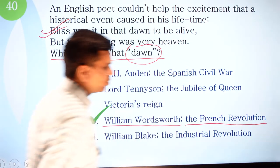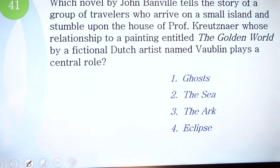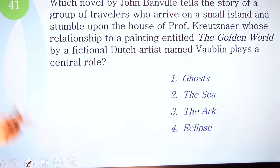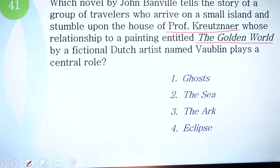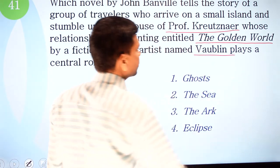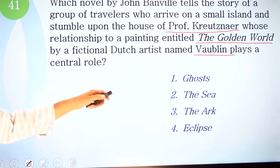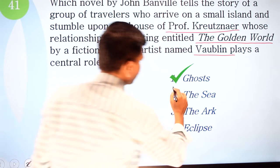Question 41: which novel by John Banville tells the story of a group of travelers who arrive on a small island and stumble upon the house of Professor Kreutznaer, whose relationship to a painting entitled The Golden World by a fictional Dutch artist named Vaublin plays a central role? This is a meta-fictional, story-within-a-story structure. The correct option is number one — Ghosts — where you find this character and the painting.